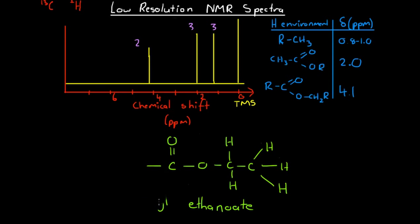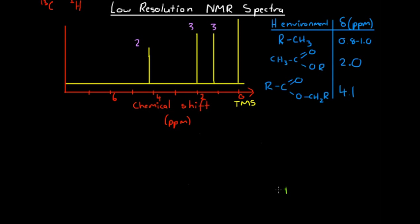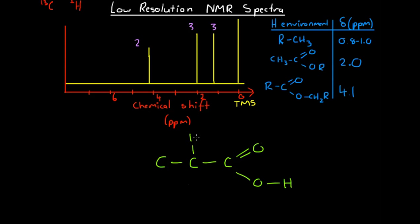It is very difficult for us to simply identify an unknown compound from its NMR spectrum alone. We often need to use other forms of spectroscopy and other forms of analysis to really confirm what we're dealing with. So rather than using a spectrum to determine the identity of an unknown compound, in this example we're going to do something slightly different — we're going to look at propanoic acid and the peaks that it would cause on an NMR spectra.